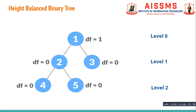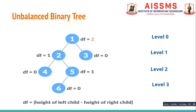Now let us see the example of an unbalanced tree. In this tree, the bottom-most leaf node of the left subtree of node 1 is 6, which is at level 3. The leaf node of the right subtree is 3, which is at level 1. So the difference between heights of left and right subtrees is 2. But as per the rule of a height balanced tree, the difference between heights of left and right subtrees should not be more than 1. So this tree is unbalanced.